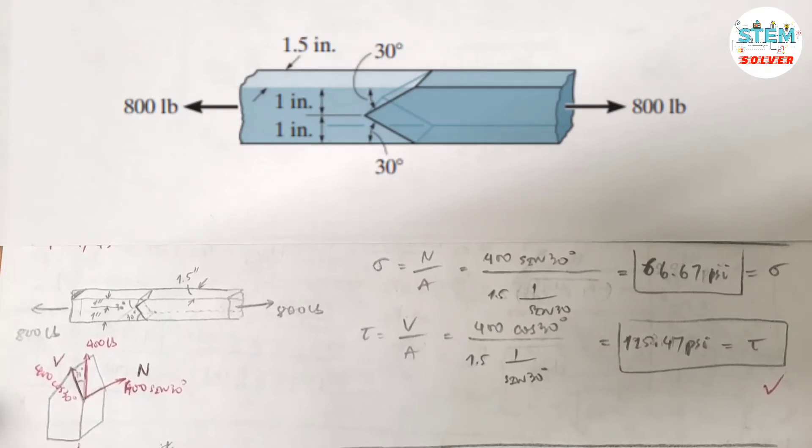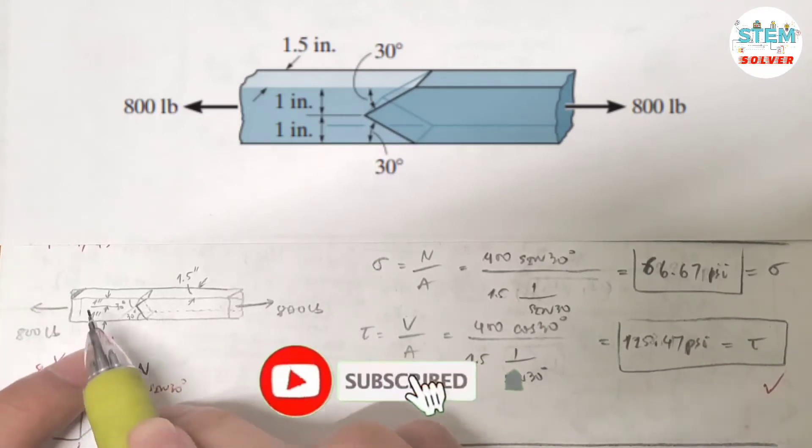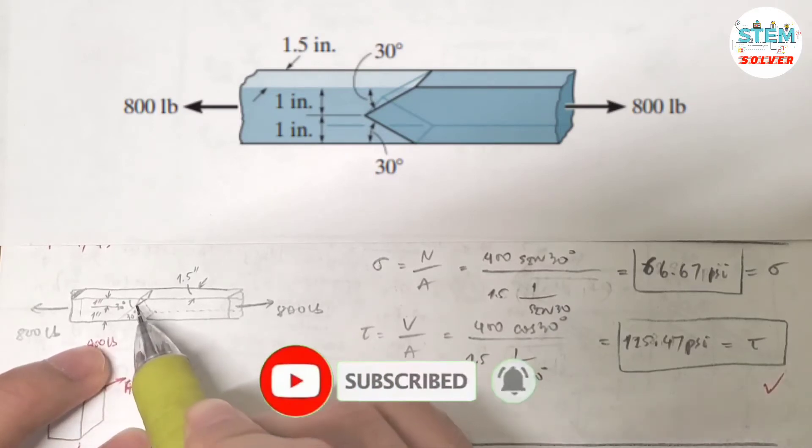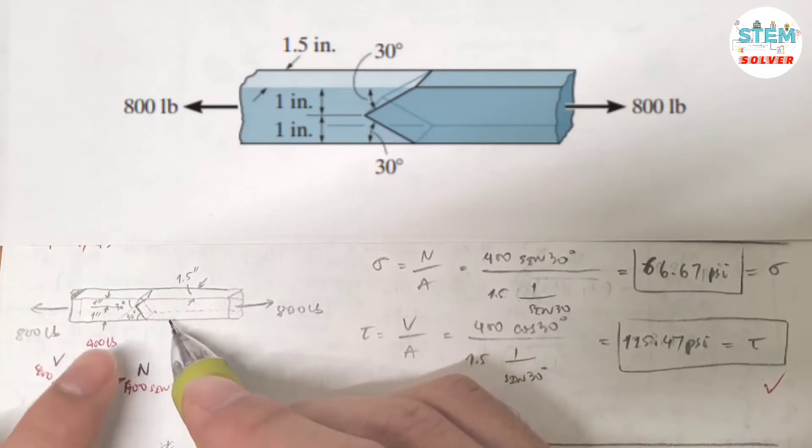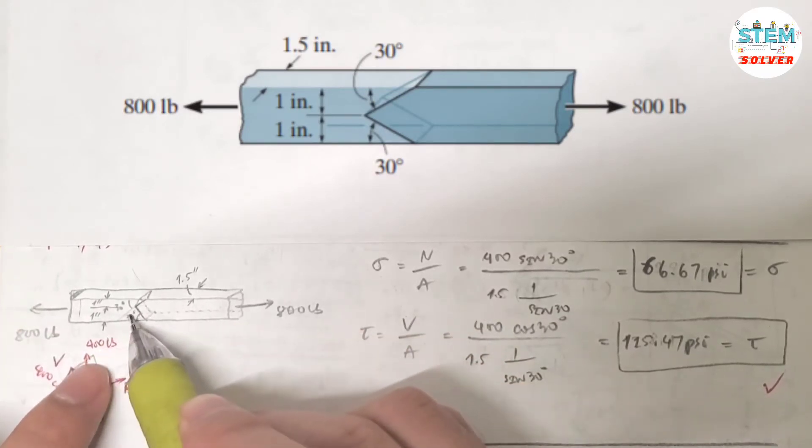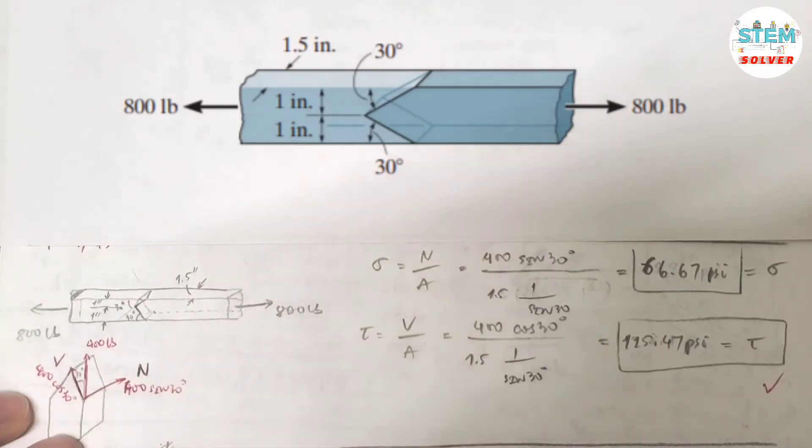This problem states that each plane is supported by 400 pounds. So here is the figure and you have this inclined plane and this inclined plane. The total force is 800 pounds, so each plane has a distributed force of 400 pounds. That's what it means.